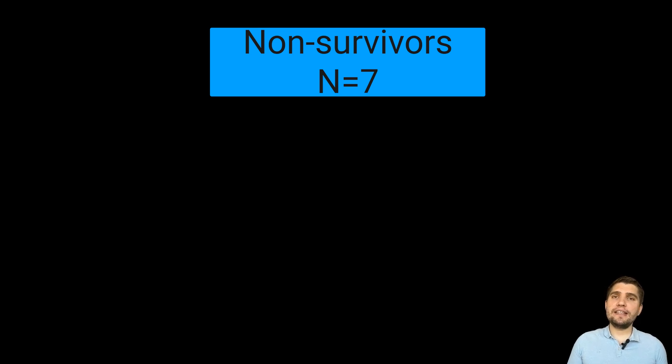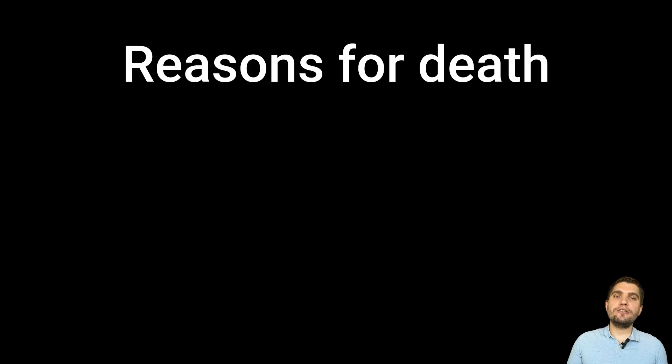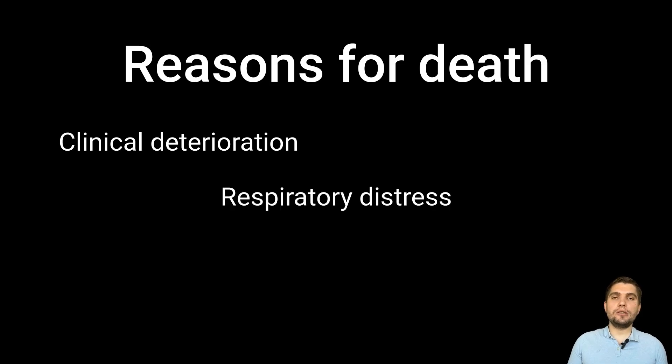In this study, seven cats, or 10%, did not survive. Of these seven cats, five cats either died or were euthanized on the day they arrived. One cat died the following day, and another cat was euthanized after three days. The reasons for death or euthanasia included clinical deterioration, severe respiratory distress, cardiac arrest, coma, and poor prognosis.